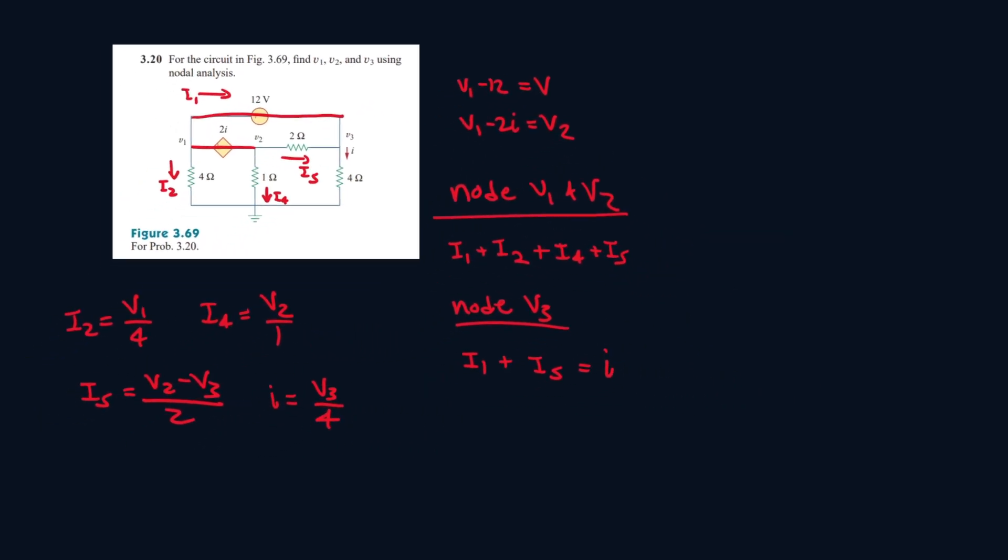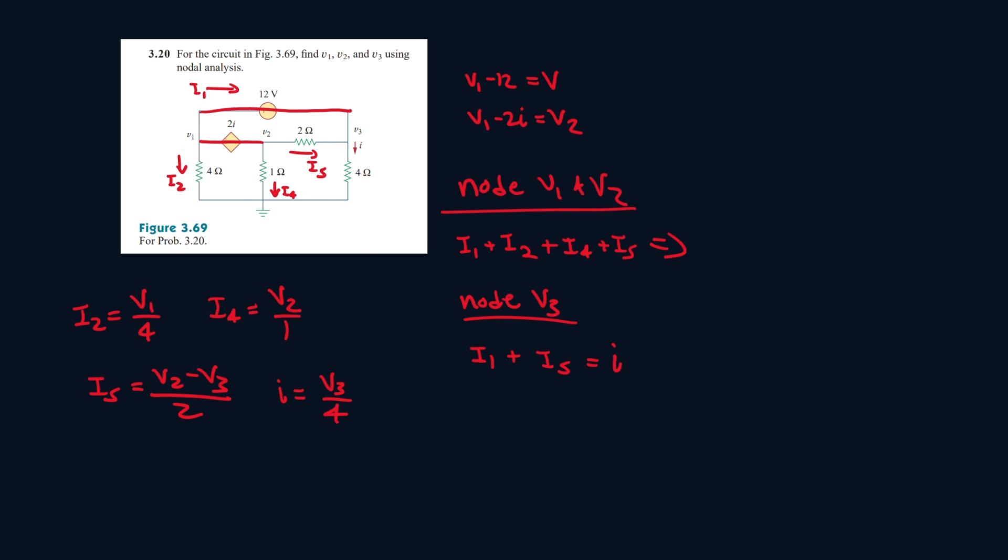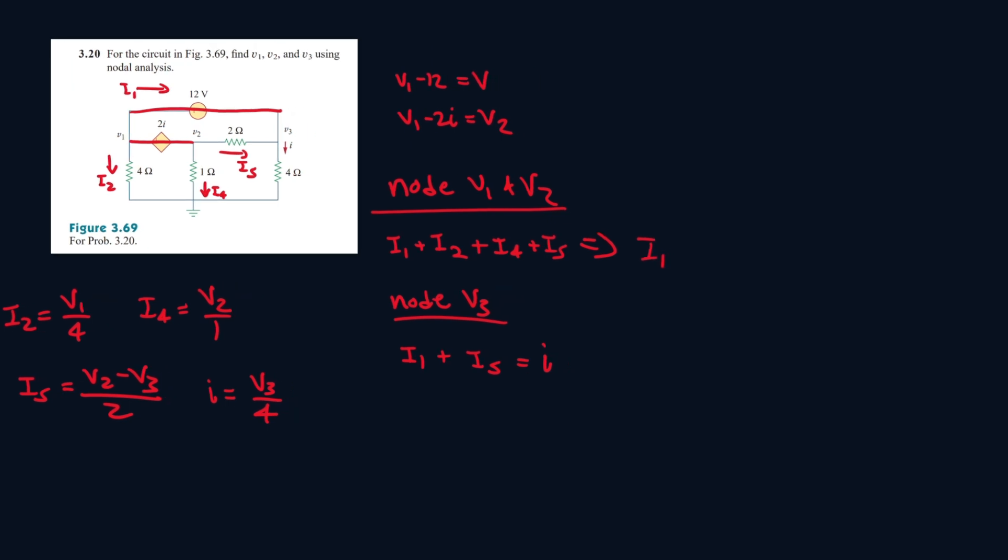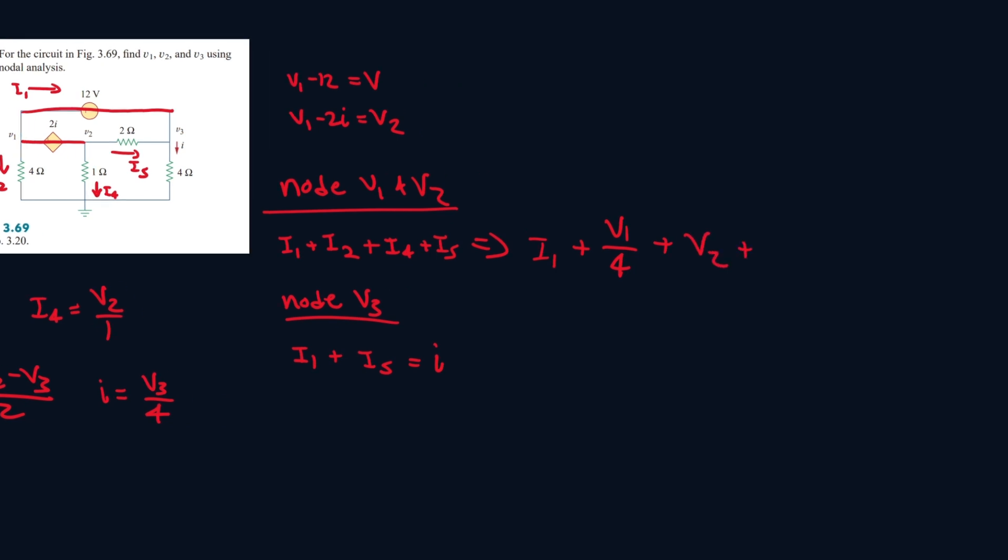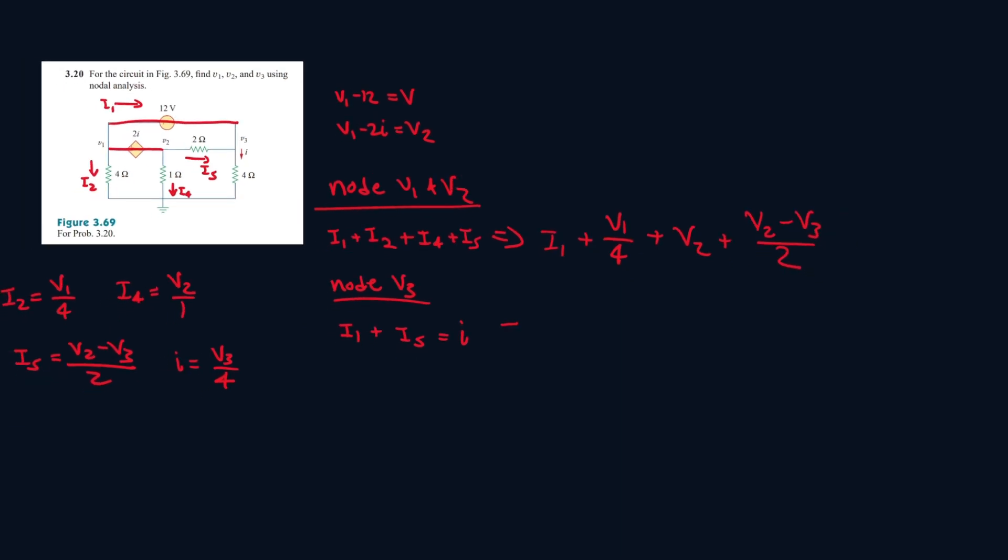So let's plug in these equations. So this one, it will be i1 plus i2, v1 over 4, plus v2 plus v2 minus v3 all over 2. And this one, it'll be i1 plus i5, v2 minus v3 all over 2 equals v3 over 4.